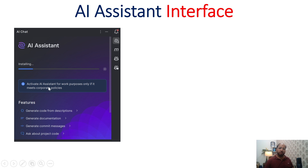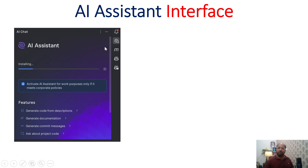If you read this particular statement: activate AI Assistant for work purposes only if it meets corporate policies. So this is the icon. In my case, I'm using the latest version of IntelliJ which is 2025, and by default it was showing this particular icon. In case you don't see it, you can simply go to the plugin section, download AI Assistant, and start using it. After downloading it, click on the icon and you'll have to log in to your JetBrains account. You can use a Gmail account or GitHub account. In my case, I have integrated a GitHub account.